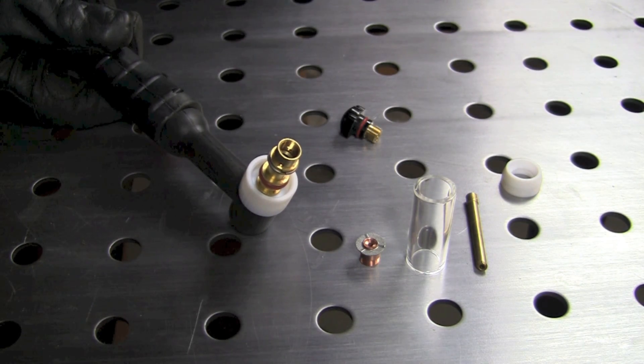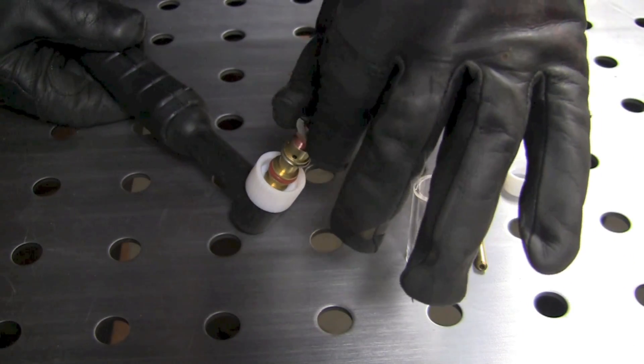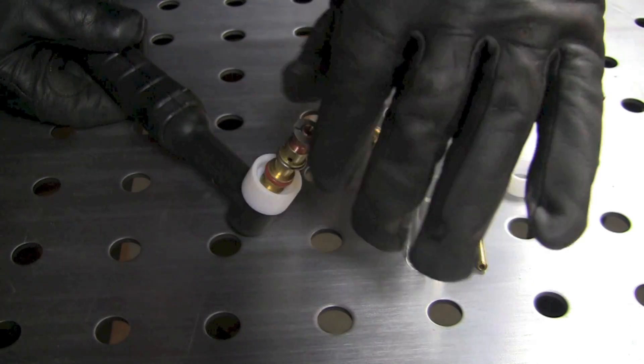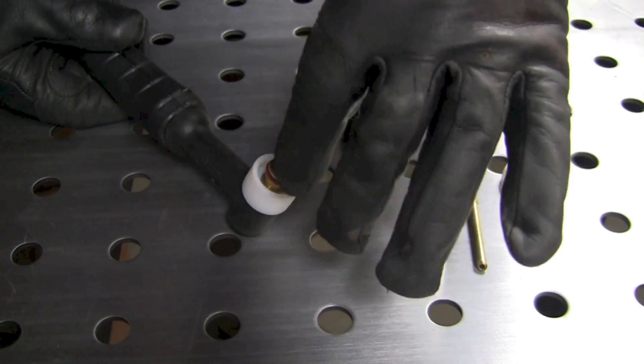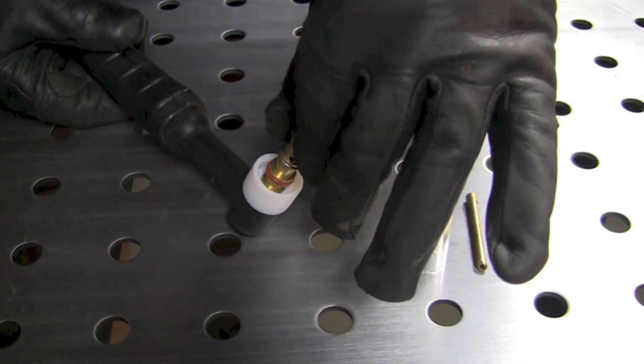The next piece we're going to install is the piece that looks like the gas diffuser with the small screen on the end of it. We're going to thread that down in place.